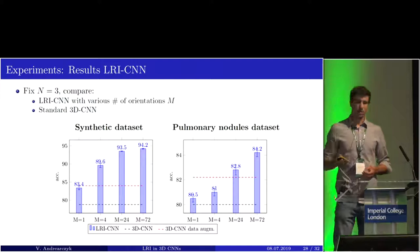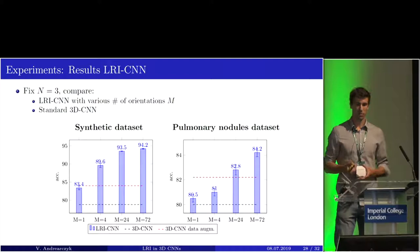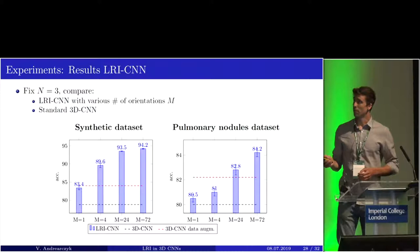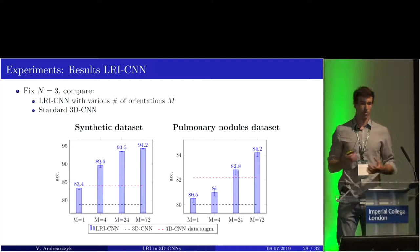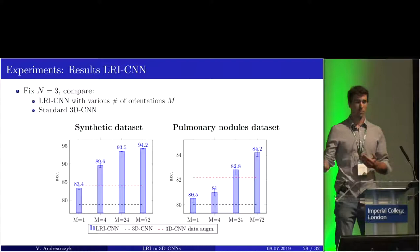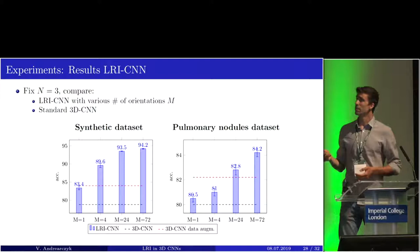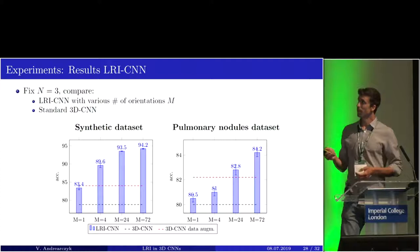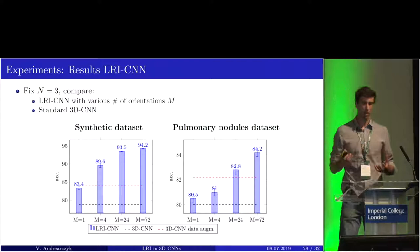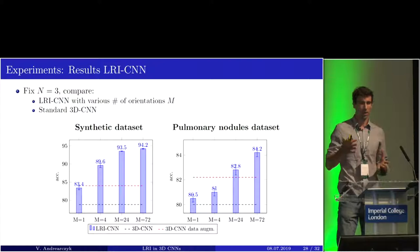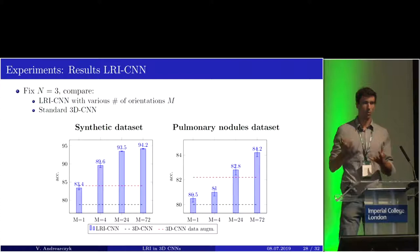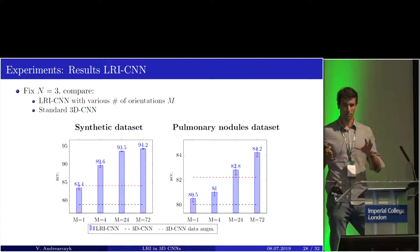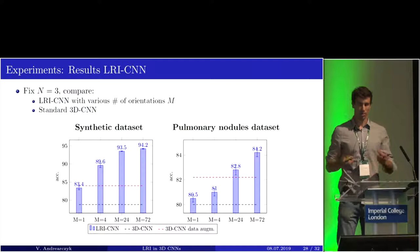Now we use the steering property. We fix the maximum degree to N=3 and evaluate for various numbers of orientations on both datasets. We see that as we increase the number of orientations, we quickly outperform a standard 3D CNN — even when the 3D CNN is trained with data augmentation. On the medical dataset, this shows that local patterns such as the border of a tumor or local tissue structures occur at different orientations, and our built-in local rotation invariance is able to detect them.